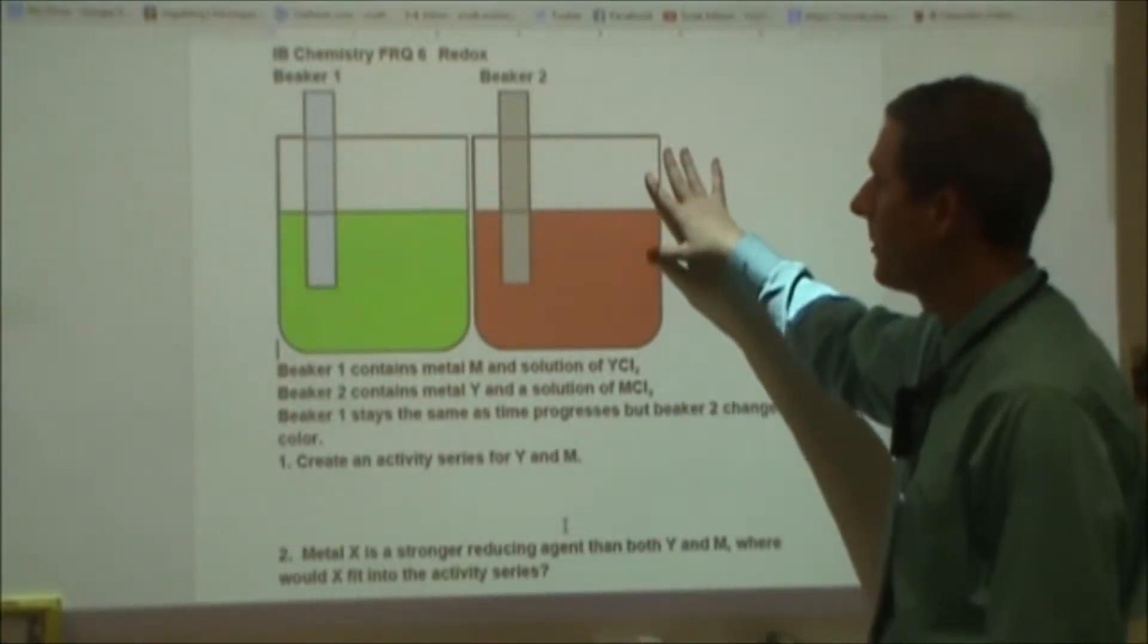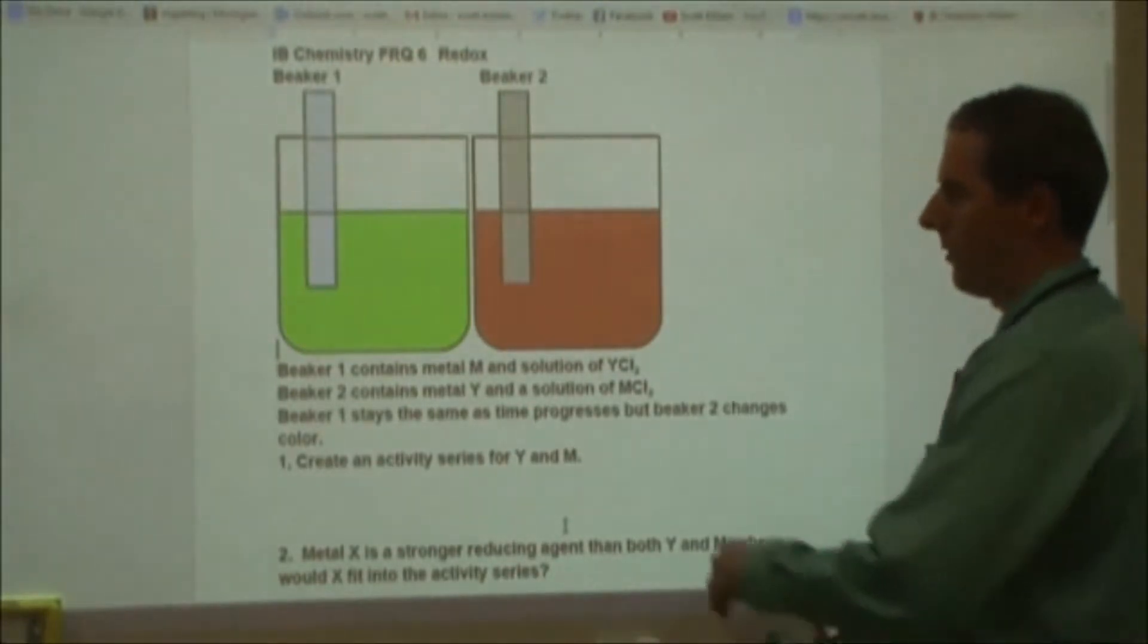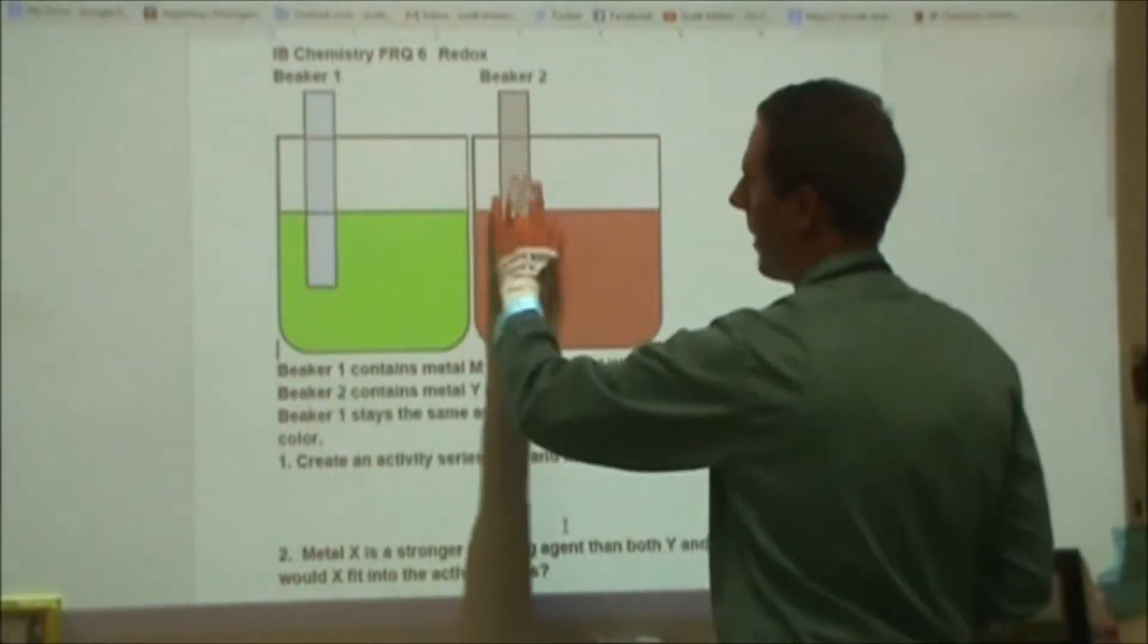This is FRQ number 6 for IB chemistry. This is a paper 2 style question on redox chemistry and it's got two beakers, one's got a green solution, one with a red, two different metals.